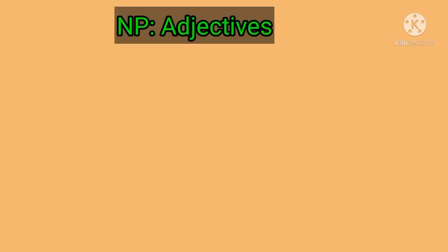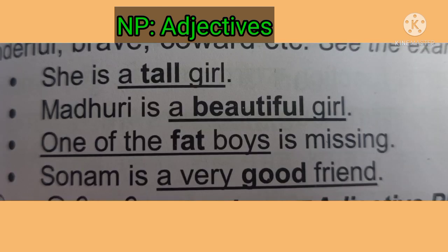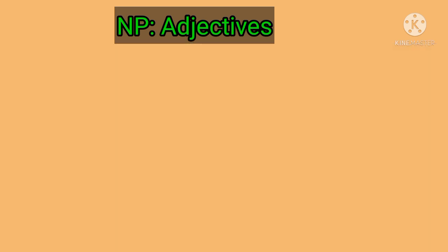Adjectives are words that describe the noun and form part of pre-modification. Adjectives is an open word class. Some examples: big, small, red, green, fat, ugly, beautiful, clever, intelligent, nice, good, bad, wonderful, brave, coward. Examples of adjectives as pre-modifiers: 'She is a tall girl,' 'Madhuri is a beautiful girl,' 'One of the fat boys is missing,' 'Sonam is a very good friend.' For more on adjectives, go to the video on Adjective Phrase.